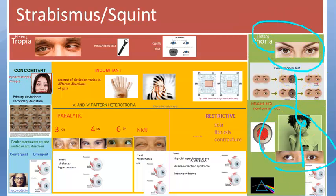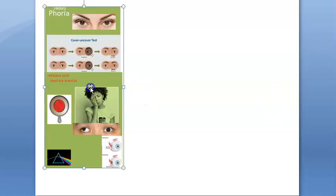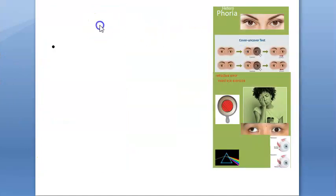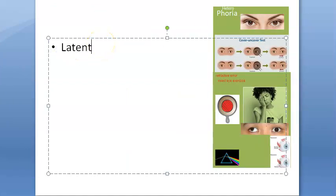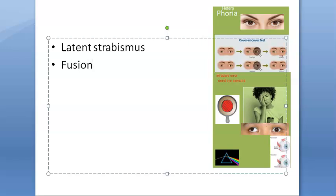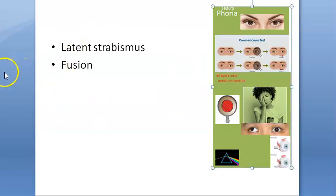In this video we want to look at heterophoria. Heterophoria is also known as latent strabismus. It is a condition in which the tendency of the eye to deviate is kept latent by fusion. The eyes have a tendency to deviate, but that tendency is not allowed to happen — it is kept latent by fusion. Therefore, when the influence of fusion is removed, the visual axis of one eye deviates away.